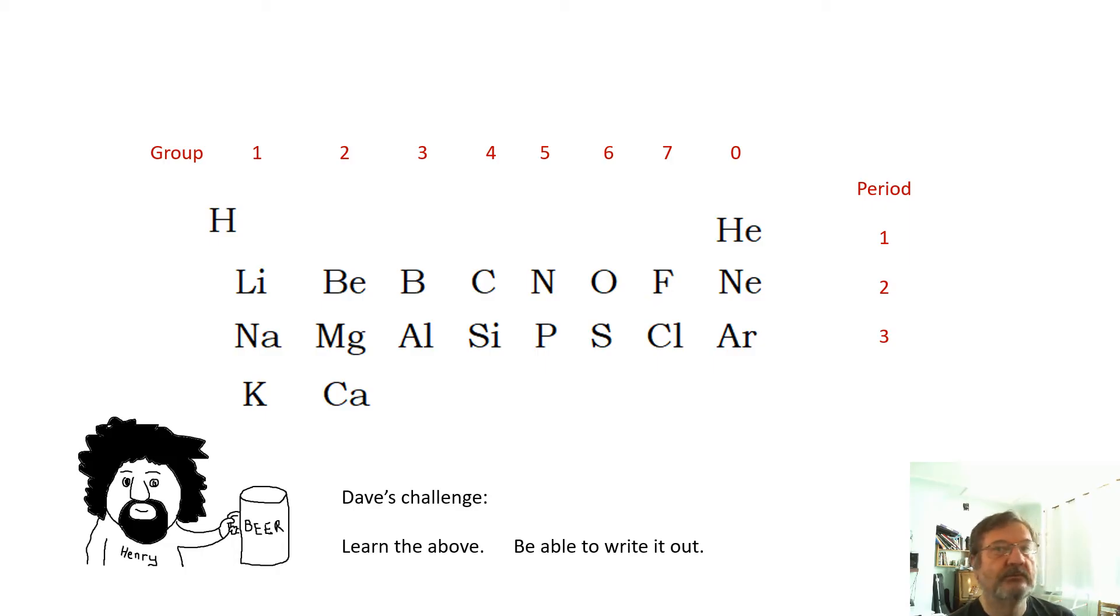That's a tip for learning things, by the way: if you make it rude, it's easier to remember. I mean, it offends me—I'm offended—but there you go. Hairy Henry likes beer by cupfuls, not overflowing, Nelly. So learn the first 20 elements, be able to write them out.